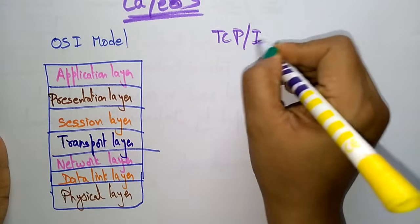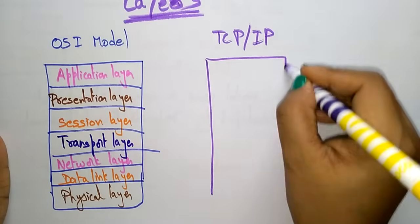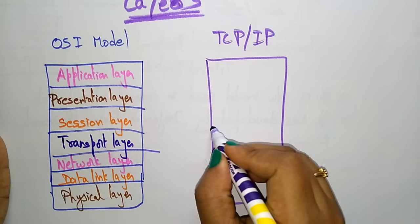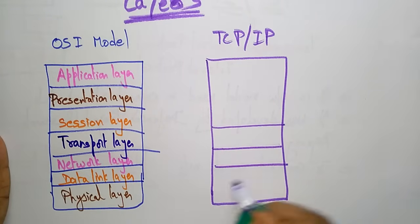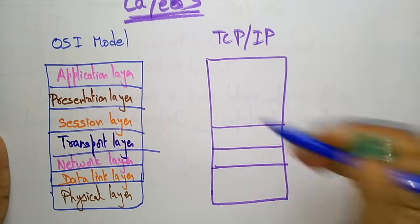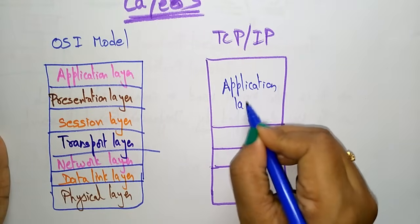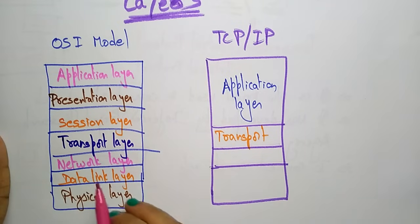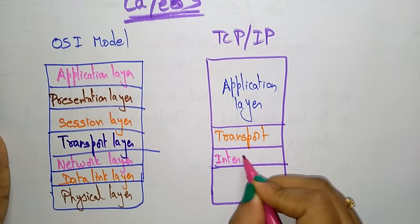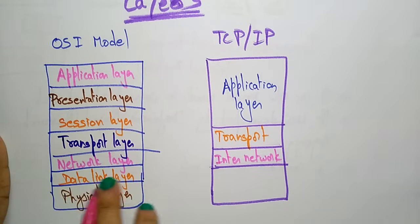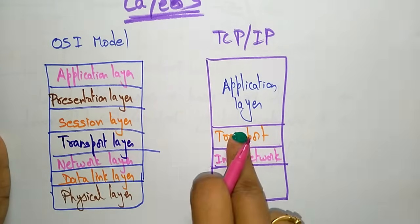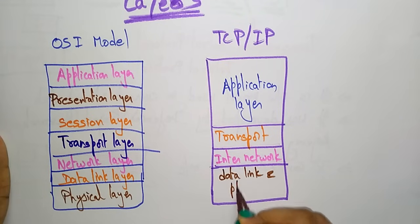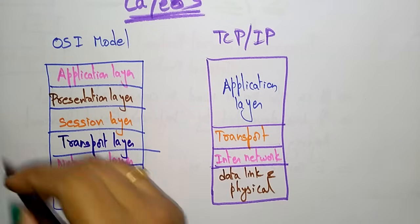Coming to the TCP/IP model, it has only four layers: application layer, transport layer, inter-network layer, and the data link and physical layer combined as one. In the OSI reference model we use the name 'network layer,' but in TCP/IP we use the name 'inter-network layer,' and the data link and physical layers both occupy just one layer.